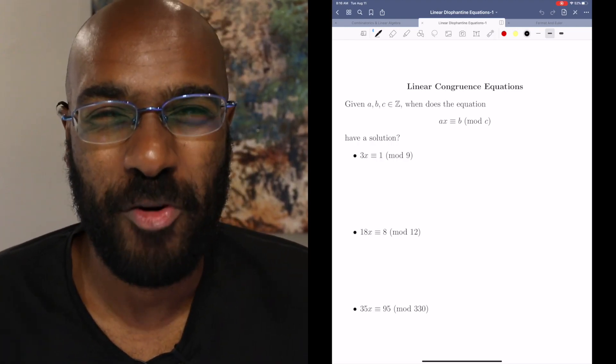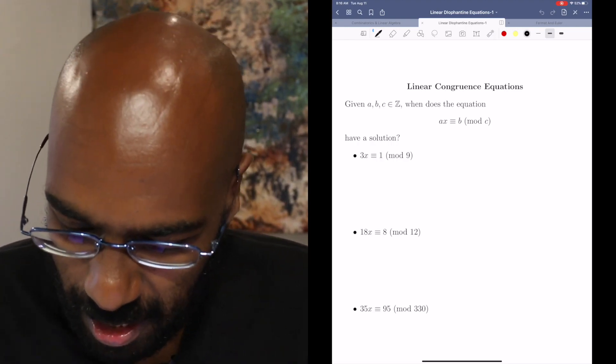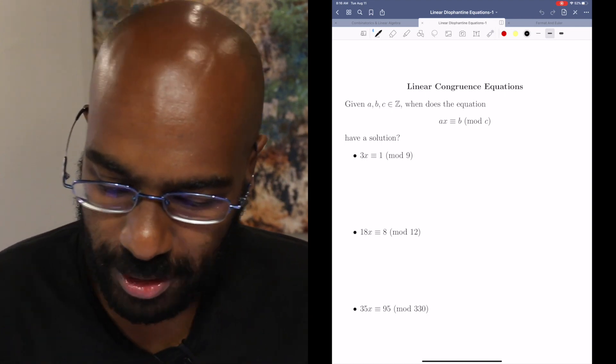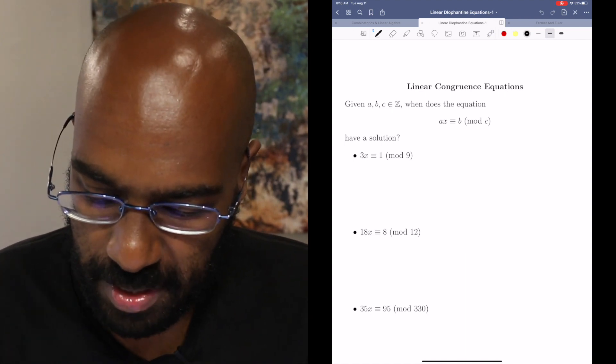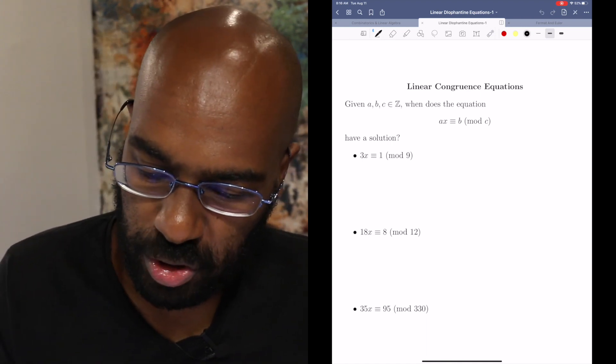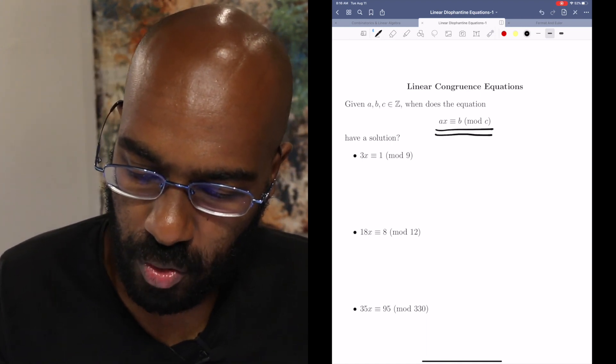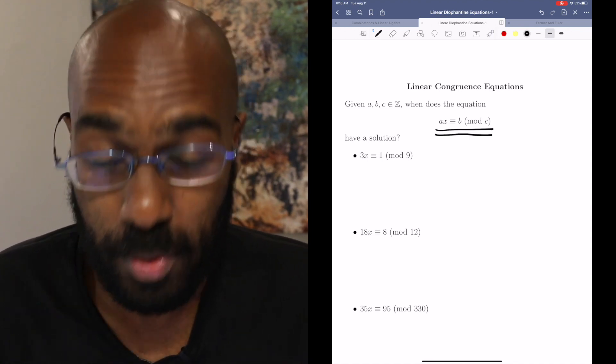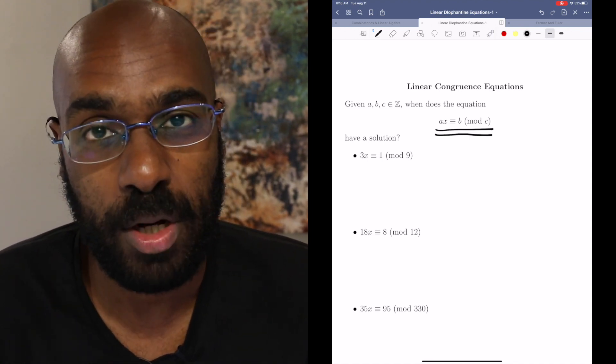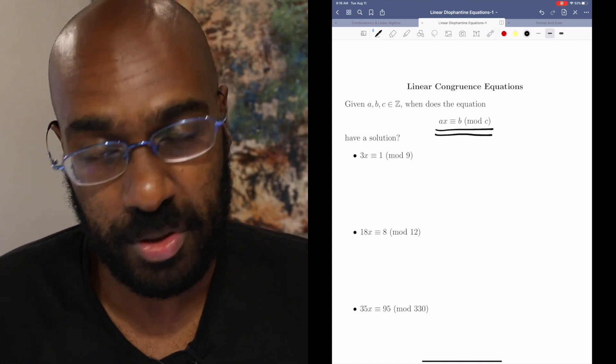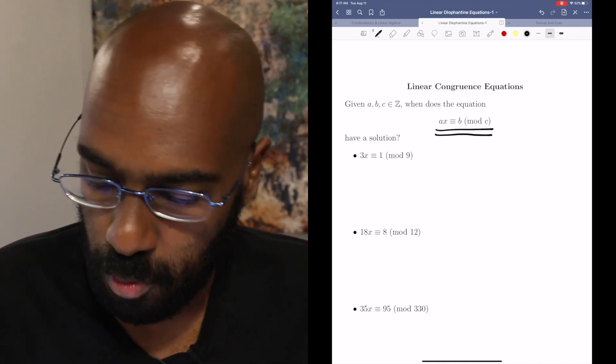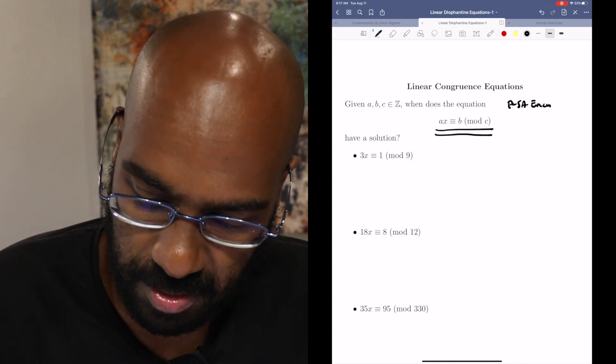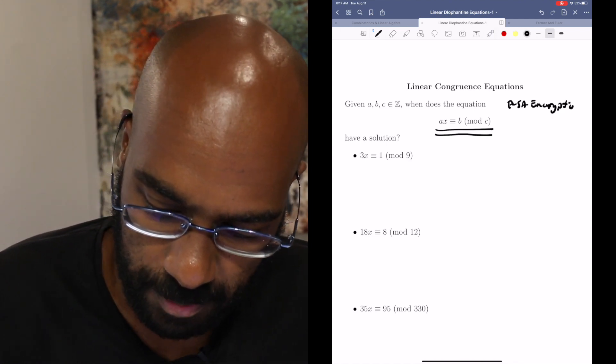Hey, welcome to today's video. I'm Prathomar. So today we're going to talk about linear congruence equations, and pretty much they're about the following question. If you have integers a, b, and c, when does this equation right here, ax congruent to b mod c, have a solution for x? And when we find the solution, if we can find one, how do we find all possible solutions? So this is going to be really important for RSA encryption, and this video is in a series of videos working up to that.